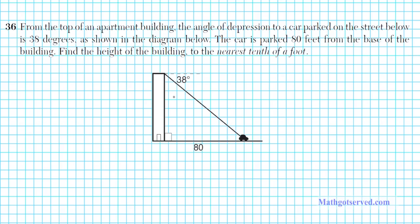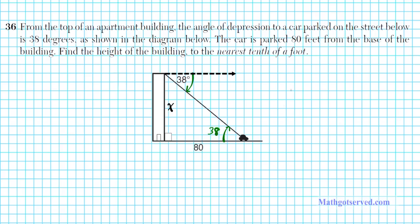We need to find the height of the building, so let's call it x. To use right triangle trig, we need two sides and an angle. Looking at this triangle, we have only two sides — how do we find an angle? The 38 degrees angle of depression is a very important hint. If you think back to geometry, this side is parallel to that side, so the 38-degree angle of depression equals the angle of elevation from the road to the line of view. So this angle here is also 38 degrees.